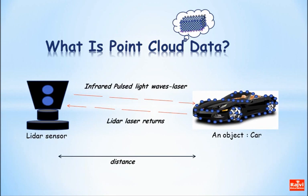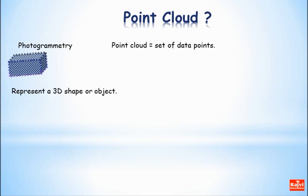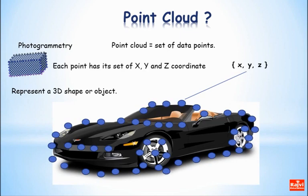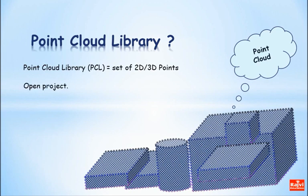A LiDAR sensor can emit up to 100,000 pulses per second. Photogrammetry is a common method for creating point clouds. Point clouds are a set of data points which represent an object, surface, or structure. Each point has its own set of X, Y, and Z coordinates. The Point Cloud Library is a set of two-dimensional or three-dimensional points, which is an open project for point cloud 2D or 3D image processing.